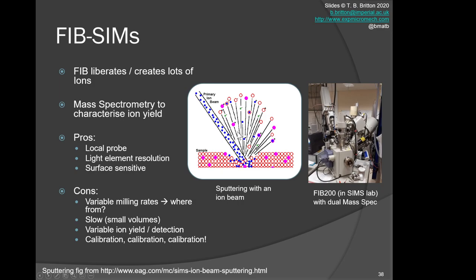One other important area is that we can also, within characterization, use the sputtered material to do mass spectrometry, and this is the basis of FIB-SIMS. There's a variety of developments in the department. We used to have a FIB 200 instrument to do positive-negative ion mass spectrometry. There's a new technique being developed using multiple ion probe sources. The cons of this is that the localized probe can give you significant variations in sputter rates that can be challenging. It's localized, which is good because it gives you very good light element resolution. It's very surface sensitive. The variable milling rates—where did you get the samples from? It's relatively slow. You get access to small volumes. You get variable ion yield and detection depending on the instrument setup, so you've got to be very careful with the calibration of the system.